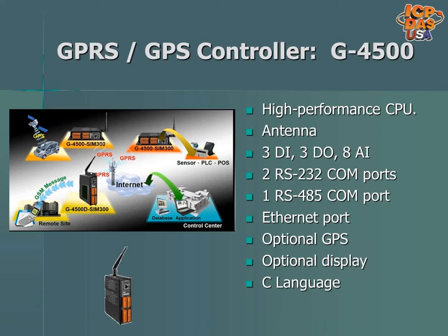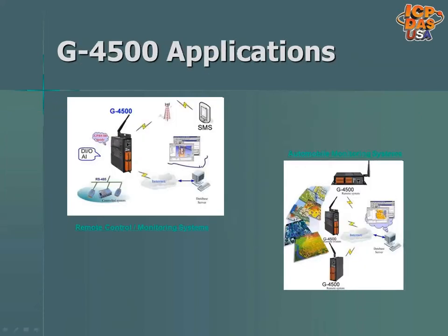The G4500 cellular-based wireless controller can be programmed in C language and has digital inputs, digital outputs, and analog inputs on board. It also has RS-232, RS-485, and Ethernet ports for communication with different devices. It is available with a GPS option for applications like fleet tracking systems. G4500 is being used in applications like remote monitoring and vehicle tracking. Devices like I/O modules can be connected to the G4500 through the RS-485 port, and the status of the I/O can be seen from a remote location. A control program running in G4500 allows for implementing logic, and a server program like Indusoft SCADA software on a PC can be configured to work with G4500.